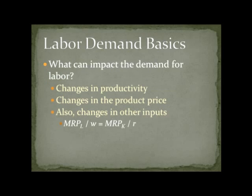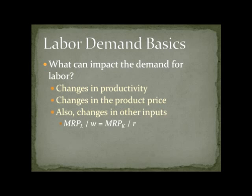What else can change the demand for labor besides changes in the wage? Anything that affects other parts of the story. A change in productivity changes the marginal product of workers, which raises or lowers their marginal revenue product. If productivity goes up, MRP goes up and firms hire more workers. Changes in the product price are also really important: if the price of what you sell goes up, then your workers — even if no more productive — have a higher marginal revenue product and are bringing in more revenue, so you can hire more of them. This is how demand for labor is linked to demand for the product: if demand for shoes increases, then demand for people who make shoes will also increase.